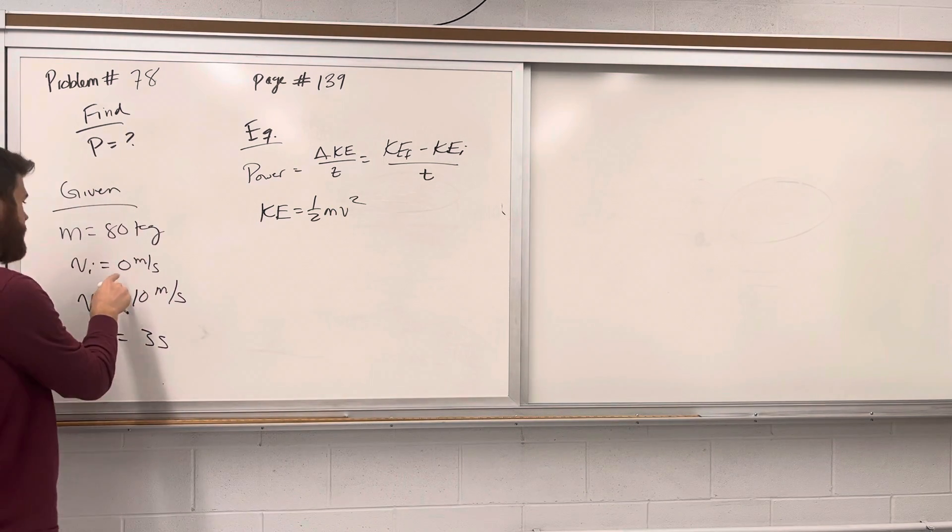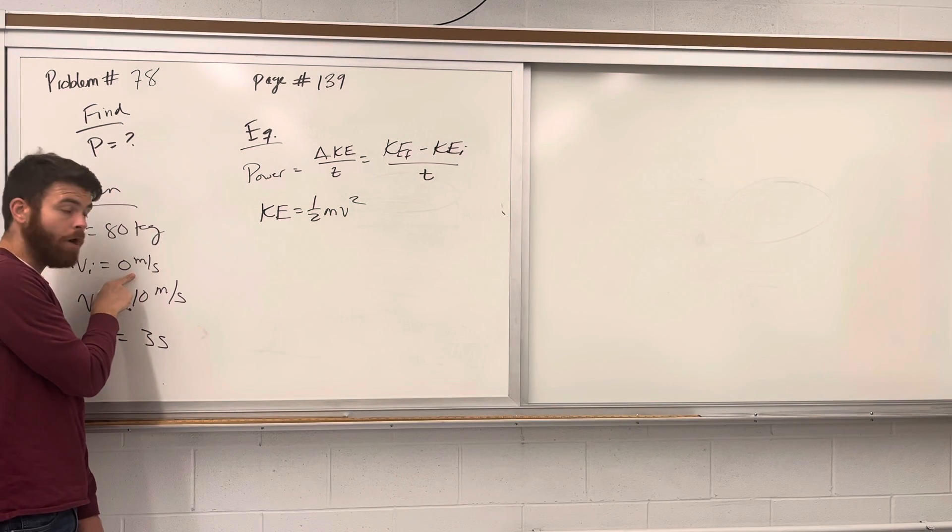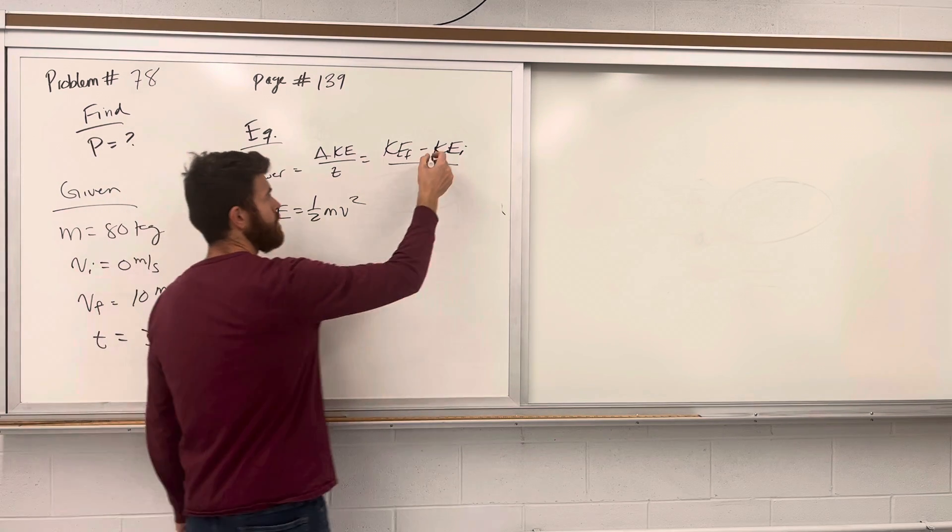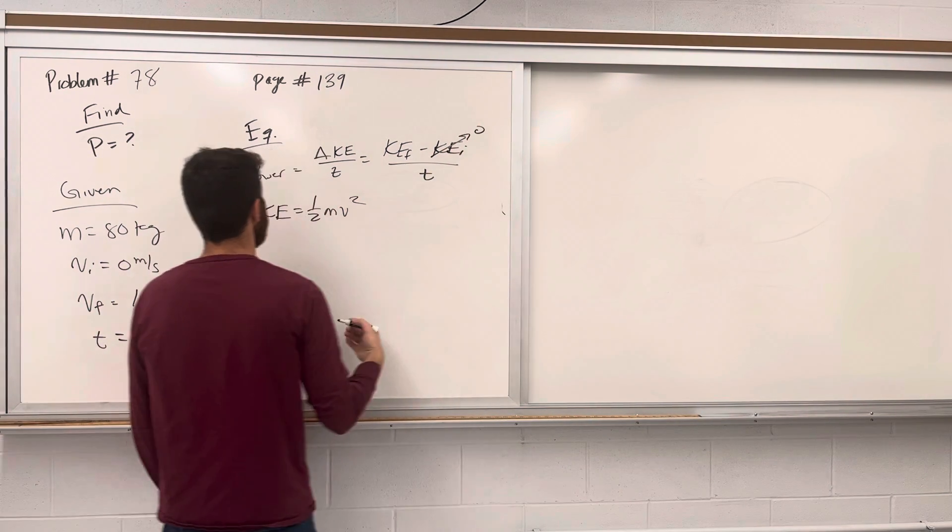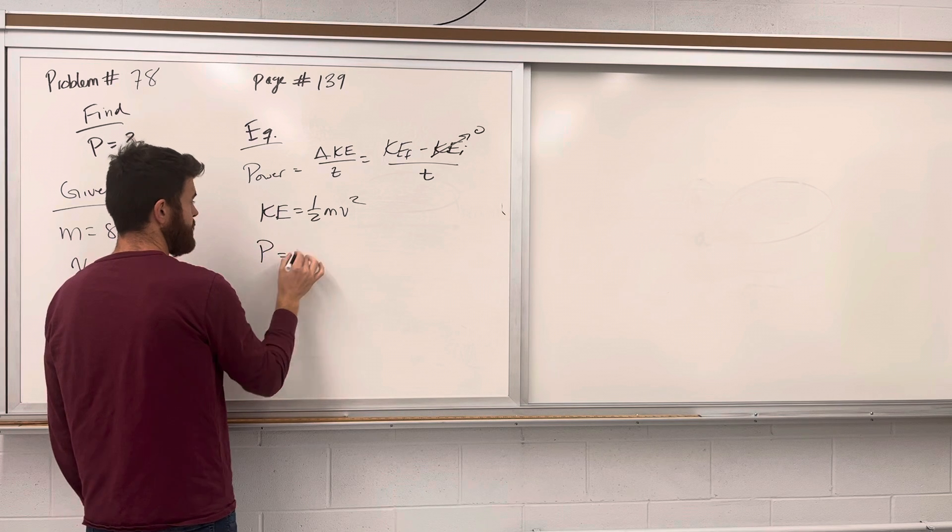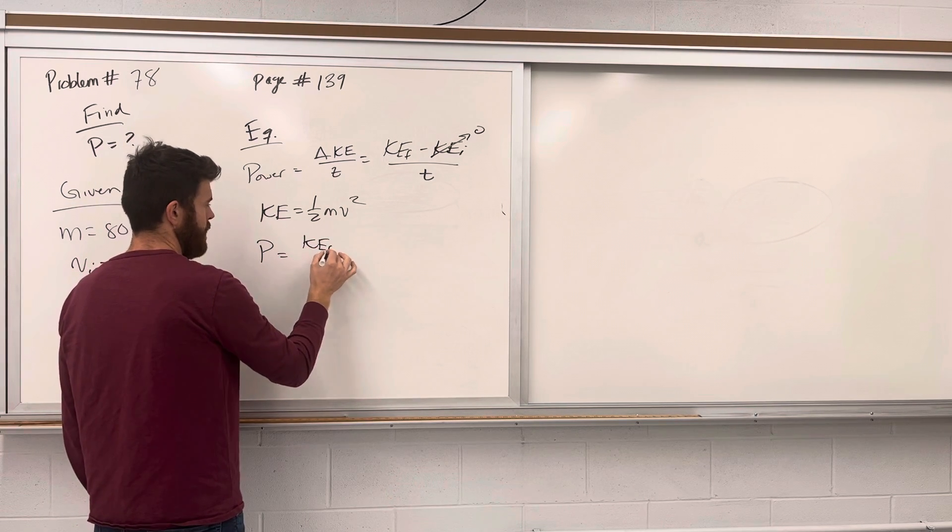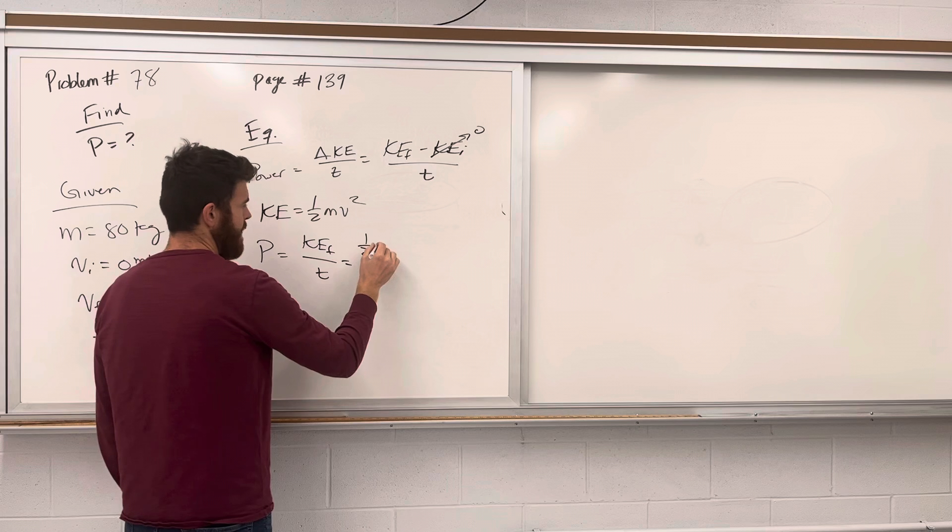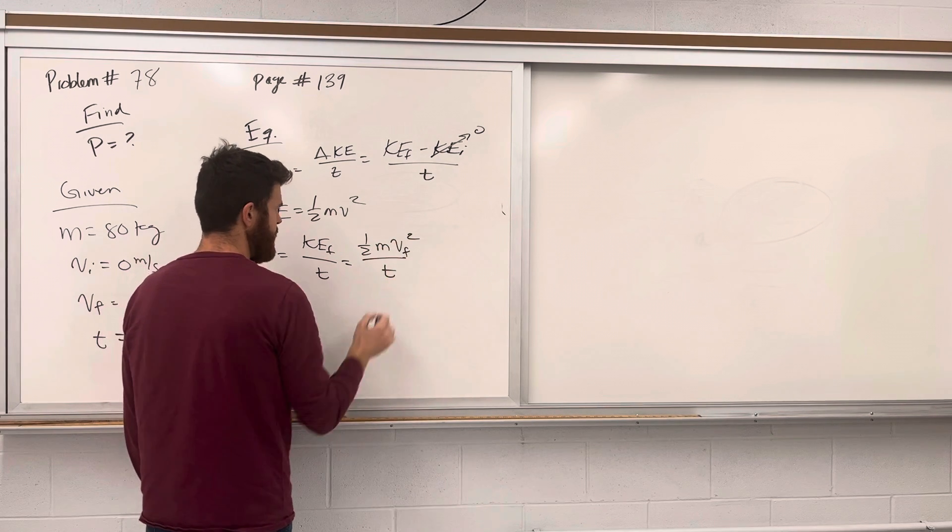Well, considering that our initial velocity is 0, that means our initial kinetic energy will be 0. So we find that the power is just equal to our final kinetic energy over time, which is equal to one half mv squared over t.